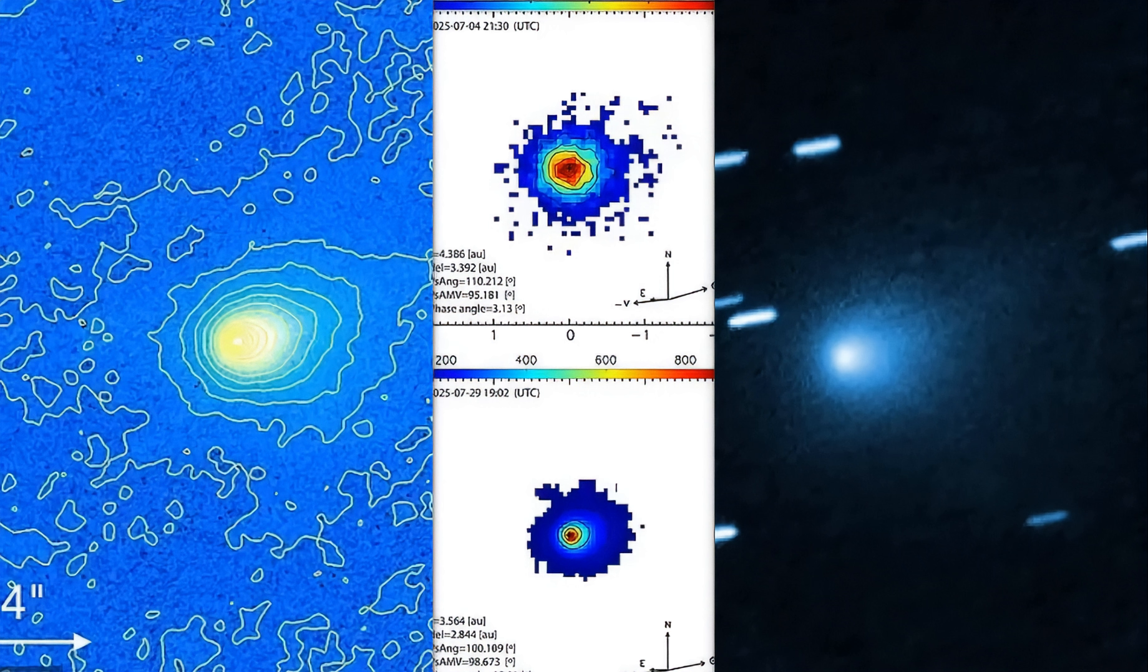We know some of the objects that's come through here before have been super suspect. But they put the name on Oumuamua that meant scout. And then when you looked at Oumuamua, long, cylindrical, metallic in nature, picked up speed when it left off out of here.